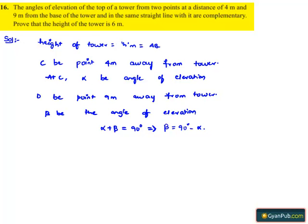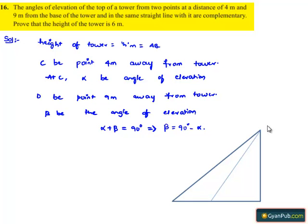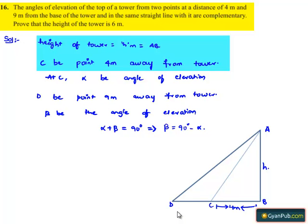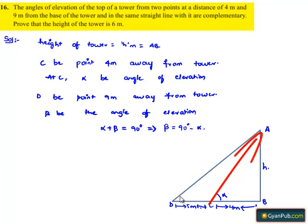Let us represent the above information in the form of figure. So here in figure AB will be the tower of height h meters, and C is 4 meters away from the point B and point D is 9 meters away from the point B. Therefore here DC we get it as 5 meters. Here at C the angle of elevation is alpha and at D the angle of elevation is 90 minus alpha.